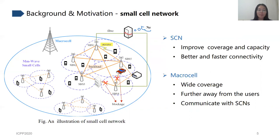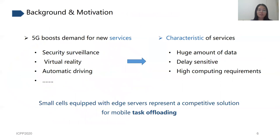Different from SCN, macrocells have wide coverage of the 5G network, but they are further away from users. 5G boosts the demands for new services such as security, surveillance, virtual reality, automatic driving, and so on. These applications usually generate a huge amount of data and are often delay sensitive. Therefore, due to strict delay and high computing requirements, such services are often prioritized to process at the edge rather than at the remote cloud, since small cells are near to the task origin and can better meet strict latency requirements.